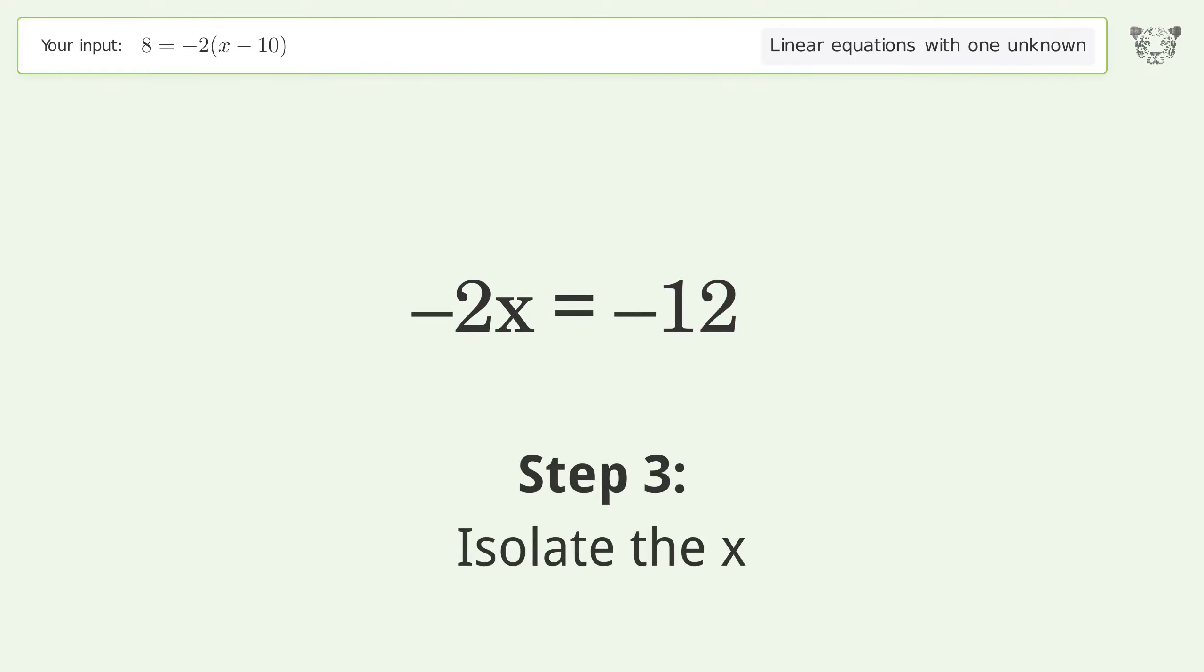Isolate the x. Divide both sides by negative 2. Cancel out the negatives.